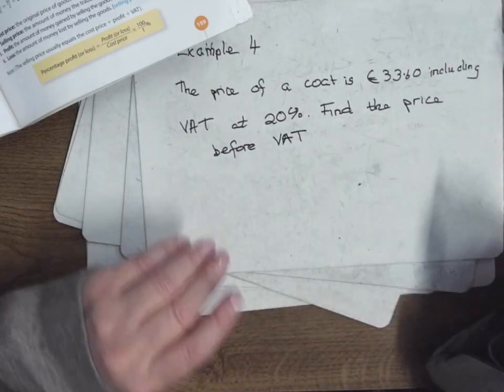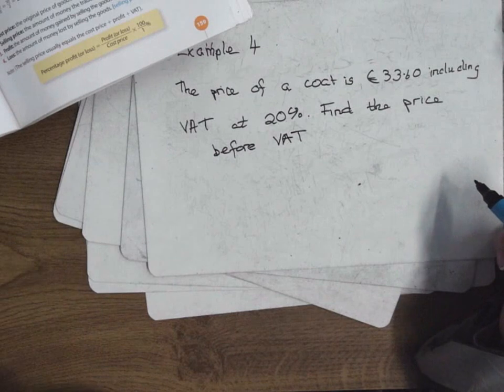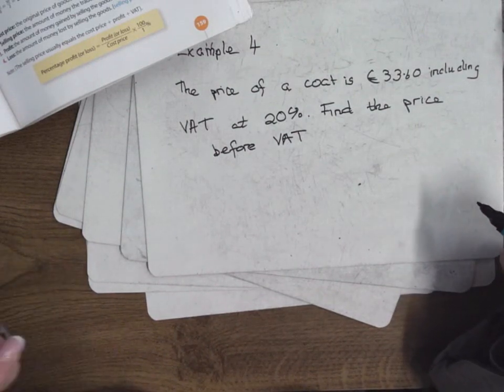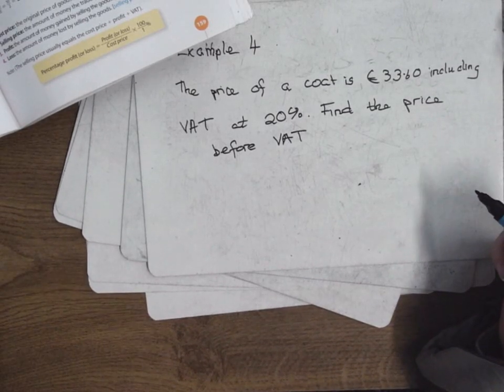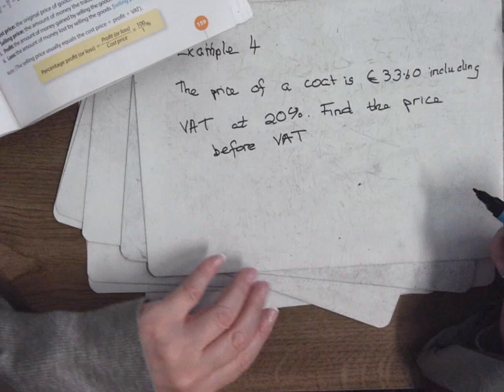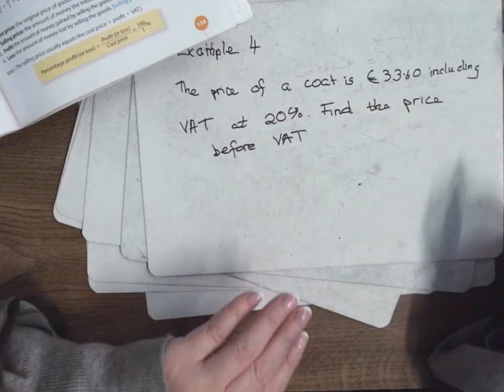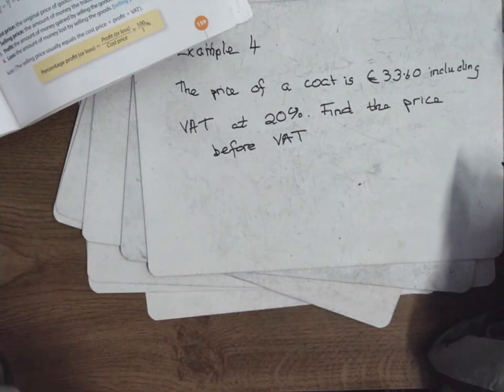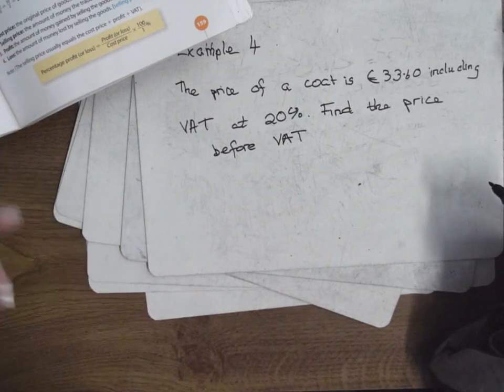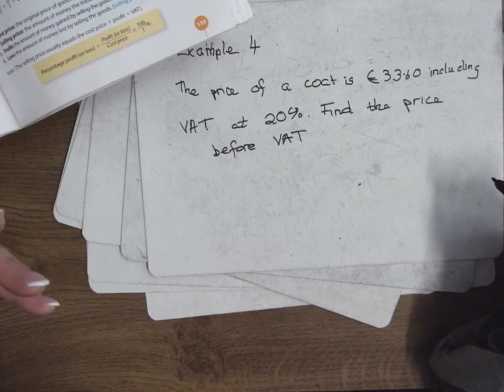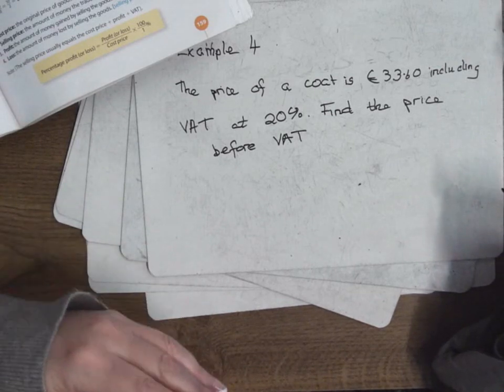That's handy if you're a tourist. It really doesn't matter to us because the price before VAT isn't going to affect us because we have to pay the VAT because we live in the country. But if say a tourist, say an American tourist, comes to Ireland and they buy this coat, they don't have to pay the VAT. Why don't they have to pay the VAT? Because they don't live in the country, so why should they give all the money to the government because they don't live here.